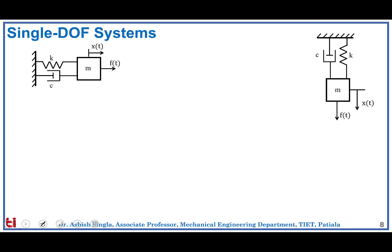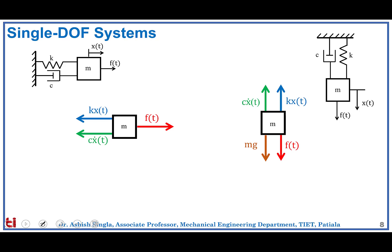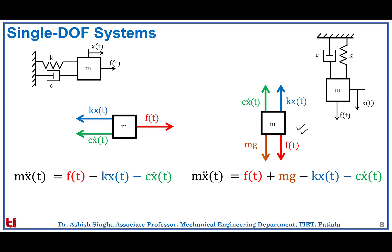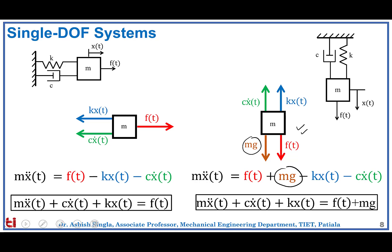Now let's orient the body in the vertical direction and see if there is any change in the equation of motion. In the free body diagram for the vertical case, the mg force also comes into play, which appears to change the equation of motion. However, collecting the terms shows this is not the correct final equation, so let's figure out why.